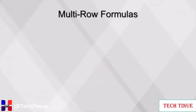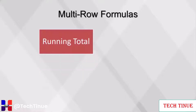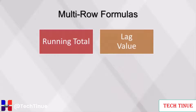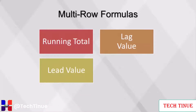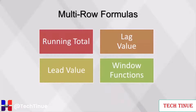Sometimes data from a separate row or rows needs to be used when creating variables — for this, a multi-row formula is needed. A running total is the most basic multi-row formula; it adds the value of a field of a current row to the value of a previous row. This can be done across an entire dataset for a particular variable, or it can be grouped by certain dimensions. A lag value looks at the data in preceding rows, while lead values look at data in subsequent rows. Window functions provide the ability to perform calculations like sum, average, and rank across sets of rows that are related to the current query row.